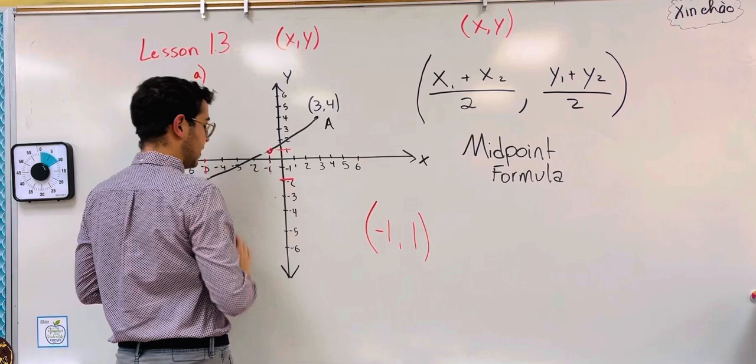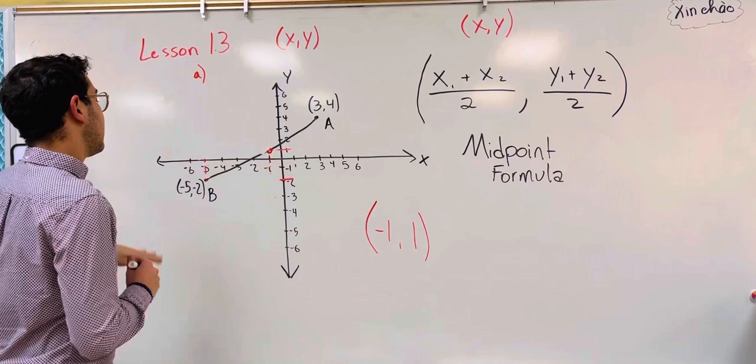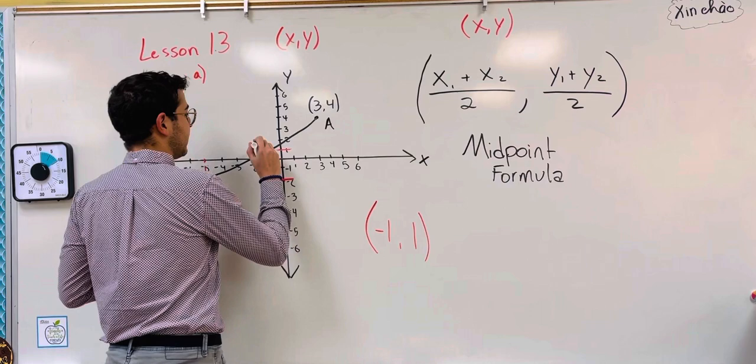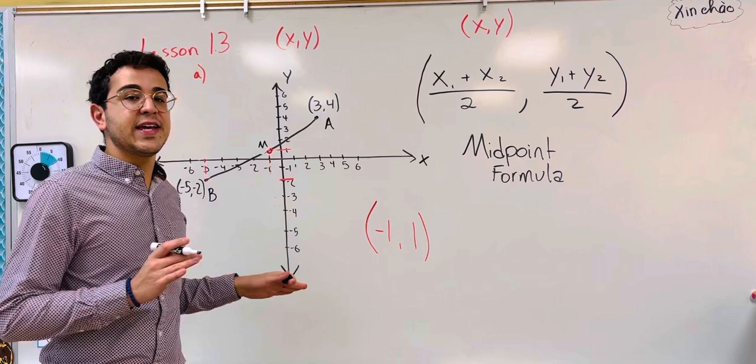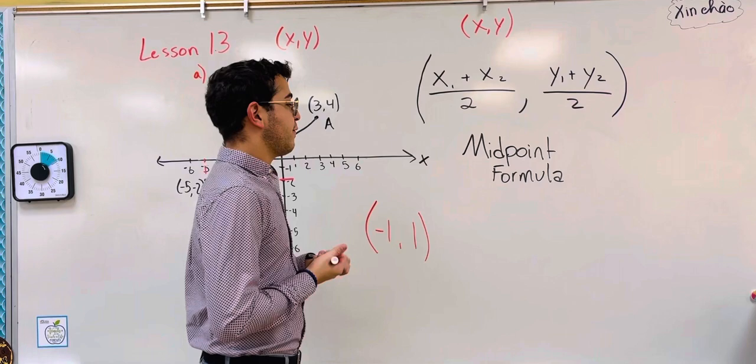What I'm going to ask you to do is take a couple of seconds to copy this same graph that you see on the left on the right. So this time you're drawing it on your own, but I want the same points and the same look. So B is negative five, negative two. A is three, four. Go ahead and pause the video if you need a moment to draw that same line graph. The answer is already here. M is equal to negative one, one. We're doing this to understand the midpoint formula.